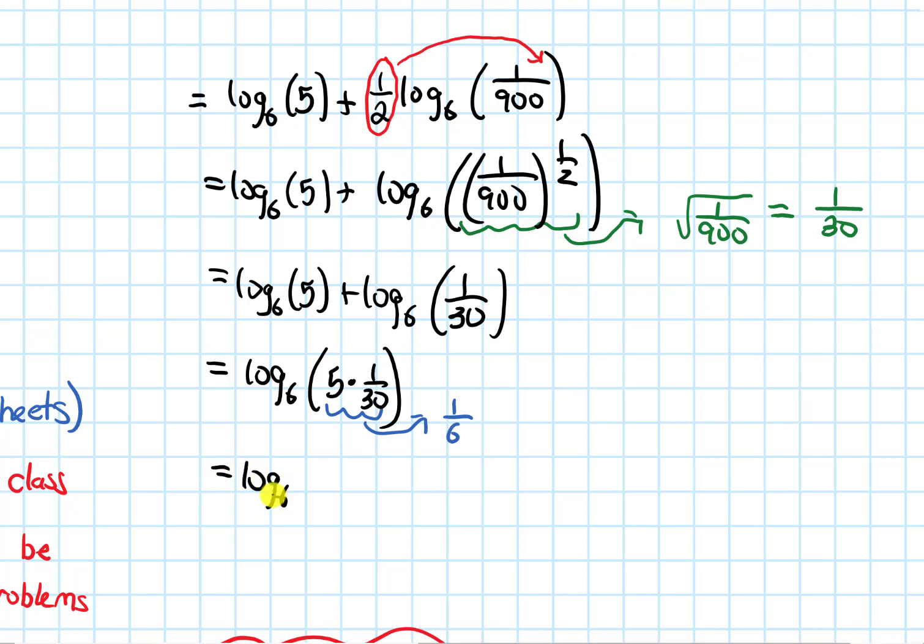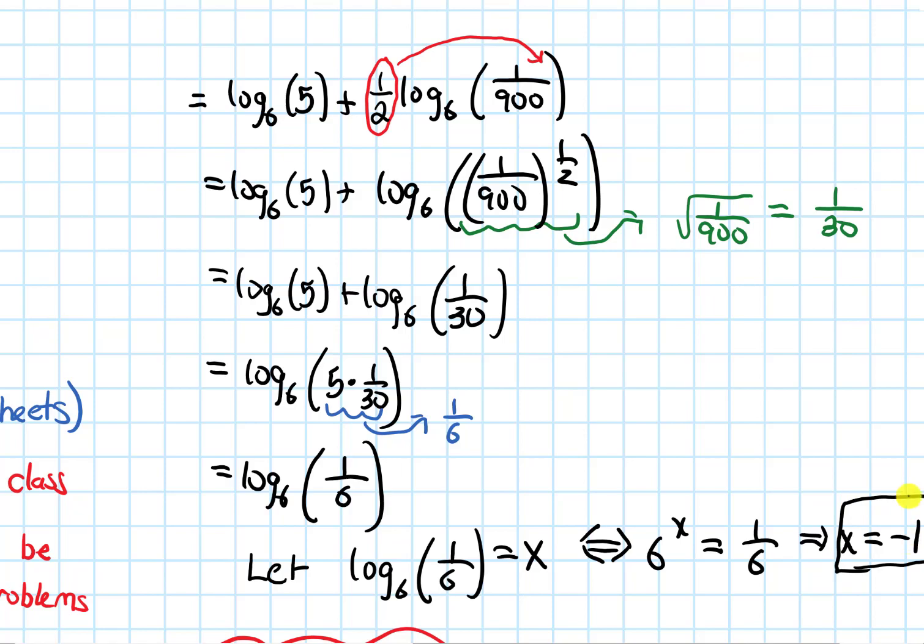So we have log base 6 of 1 over 6. So if you're already pretty comfortable with these you might already know what this is, but let's say I didn't know. I could say, well, let's let this log base 6 of 1 over 6, I could call this x, and I can rewrite it in exponential form. This is equivalent to 6 to the x power equals 1 sixth. So 6 to what power equals a sixth? Well, it's got to be negative 1. And that's my answer. My original log expression simplifies to just negative 1.